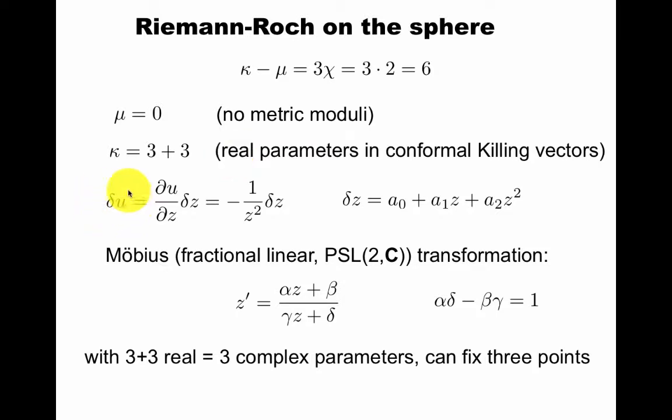If we have a holomorphic vector field in the u-patch, which is from the z-patch, then it can at most grow as z-squared for it to be holomorphic also in the u-patch. So we have 3 real parameters here, and we have another 3 real parameters in the antiholomorphic version. So we get 6 real parameters, and that corresponds to the Mobius group.